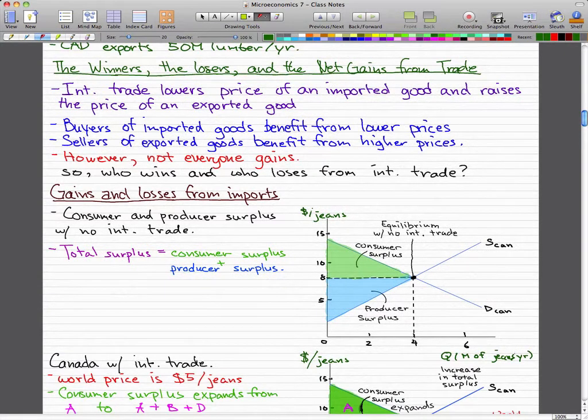And we're going to look at the gains and losses from imports. So this figure shows the market in Canada with no international trade. The total surplus is equal to the sum of the consumer surplus plus producer surplus.